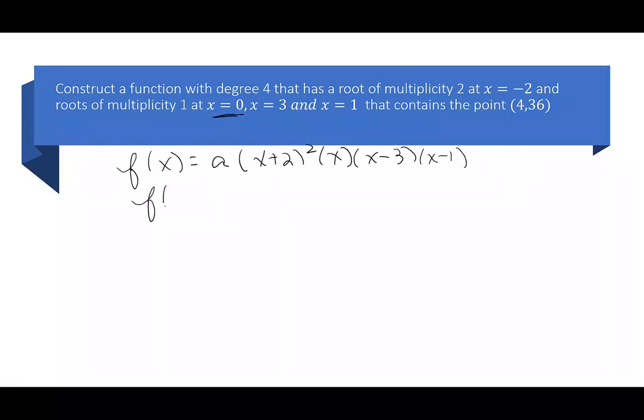This time it says if you plug in 4, I have a times (4 plus 2) squared. I have 4. I have (4 minus 3). I have (4 minus 1), and that's supposed to be 36.